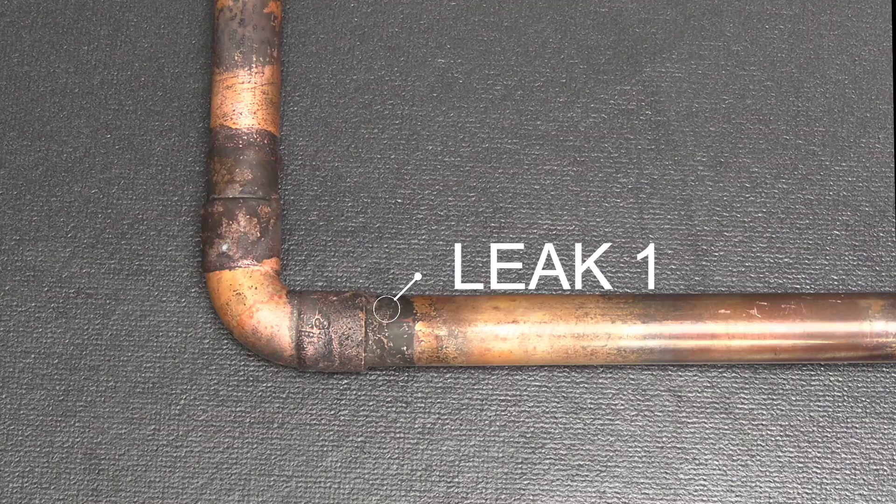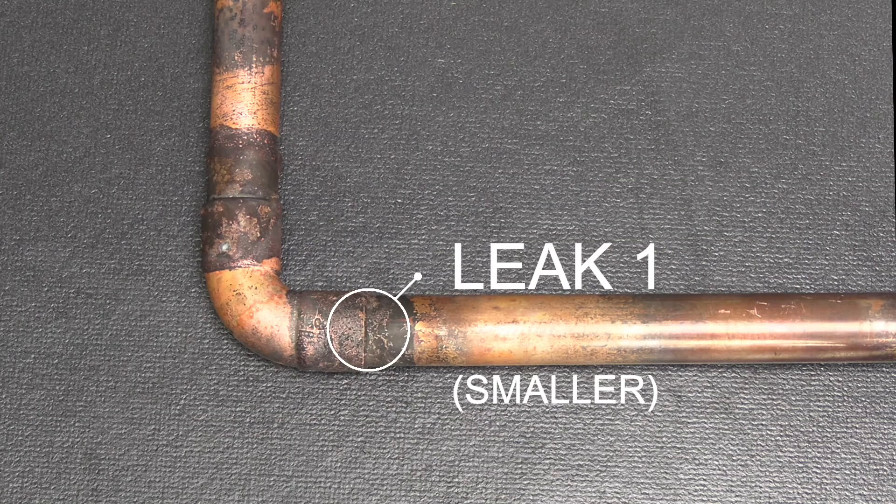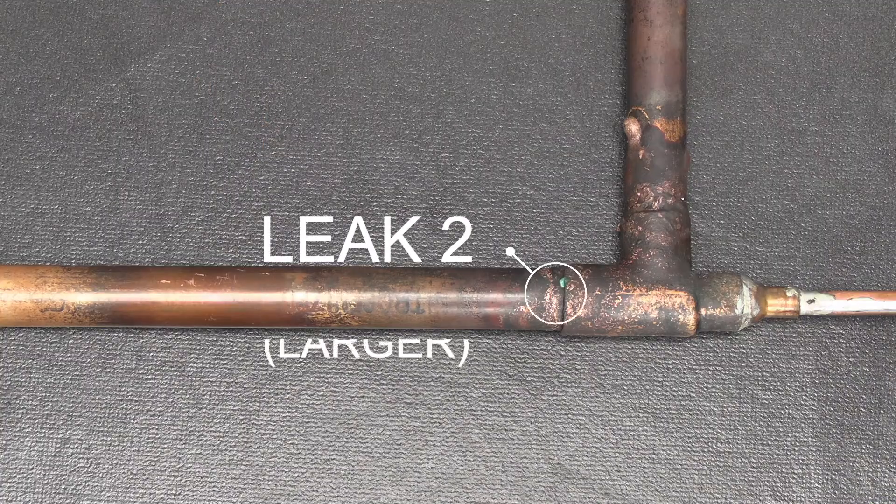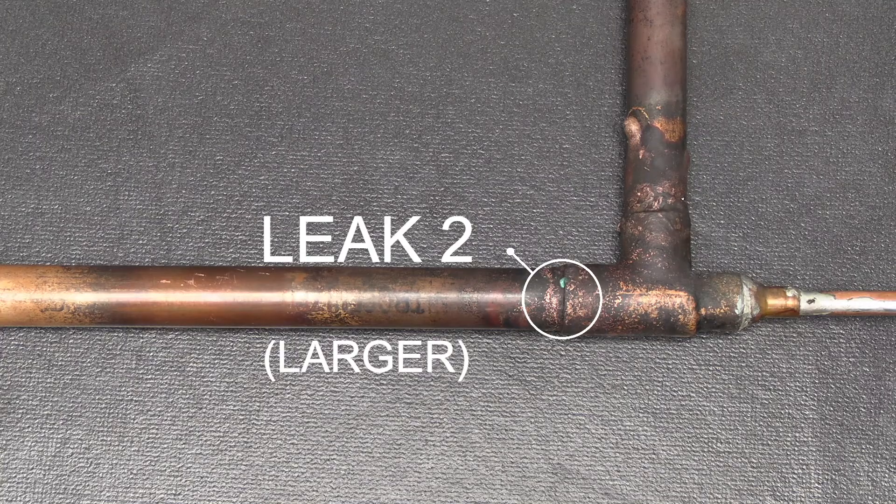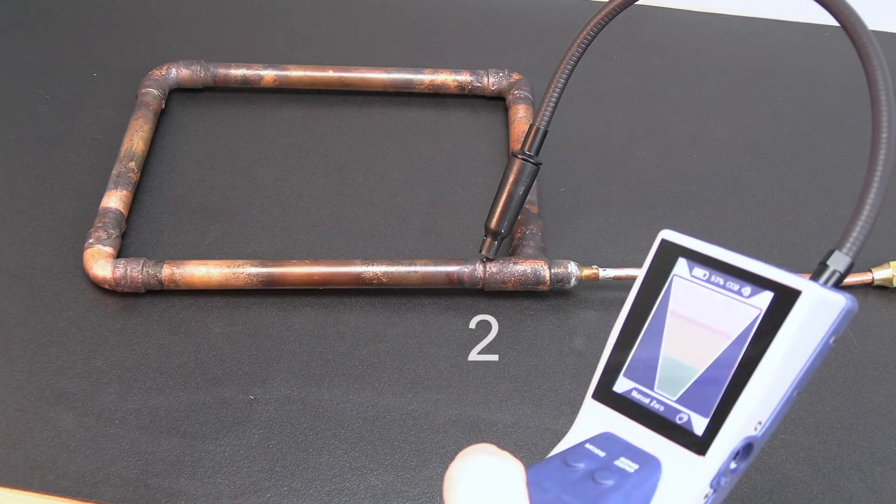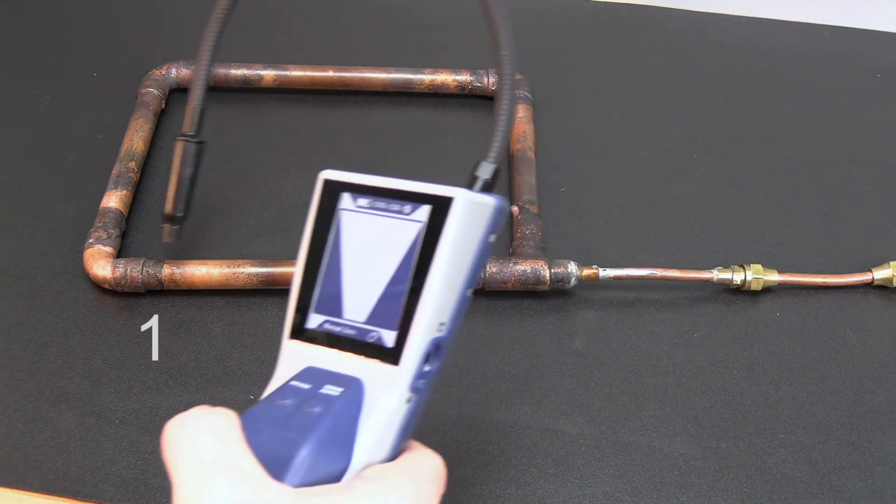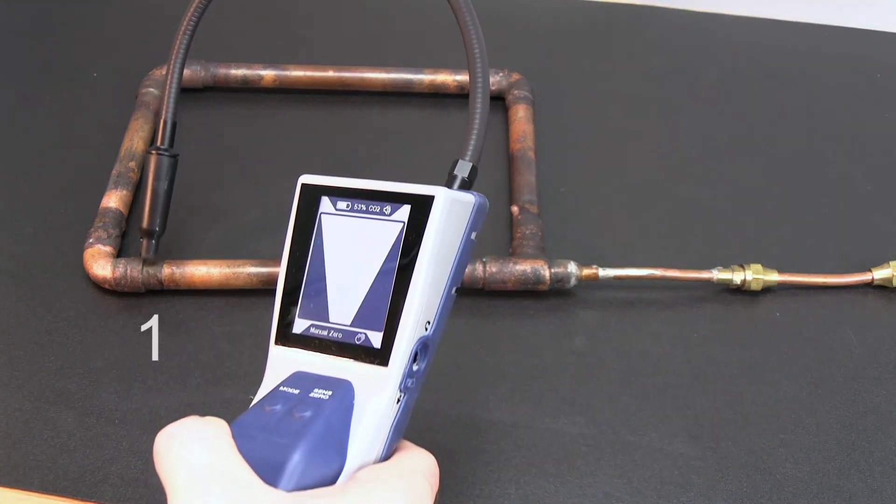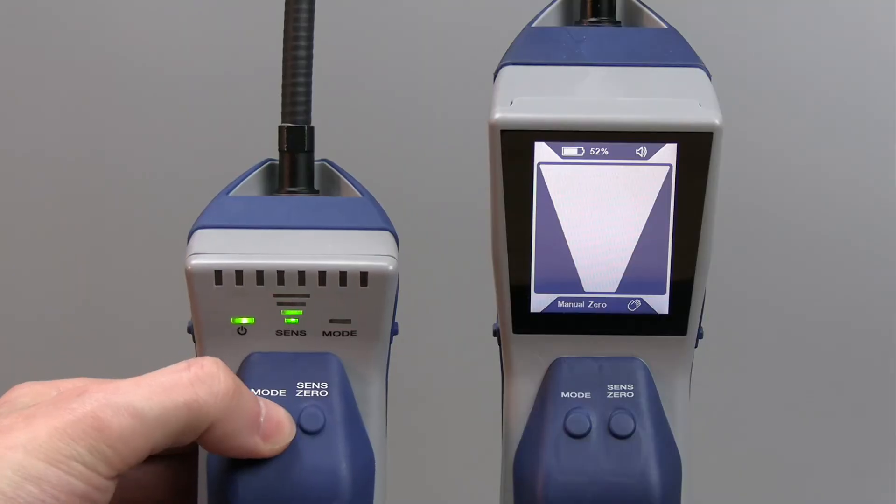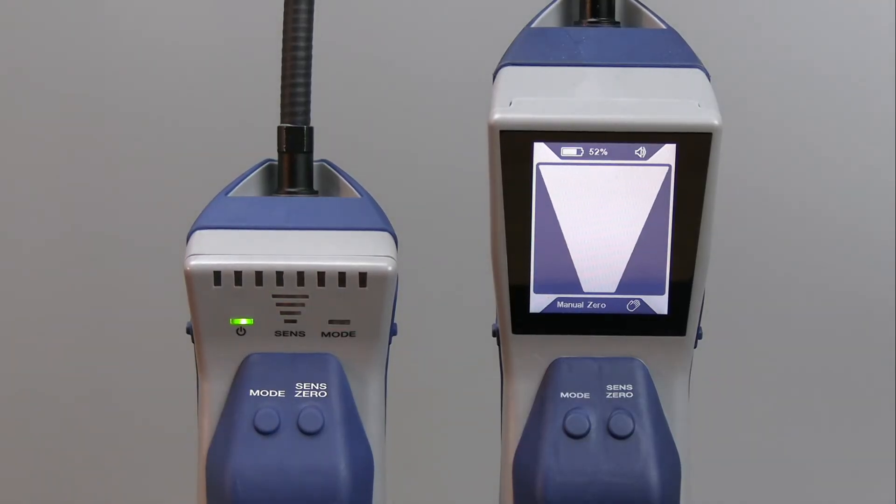Additionally, you can use Manual Zero Mode to compare more than one leak. Zero the unit on one leak and compare it to another to quickly determine which leak is largest. Note that you cannot adjust the sensitivity settings while in this mode.